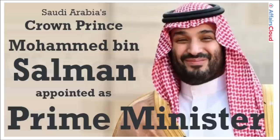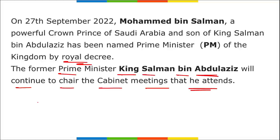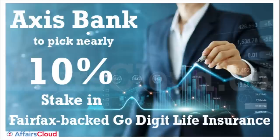Saudi Arabia's Crown Prince Mohammed bin Salman has been appointed as Prime Minister by royal decree. The former Prime Minister King Salman bin Abdullah will continue to chair cabinet meetings he attends. Mohammed bin Salman, also known as MBS, is 37 years old and a member of the Saudi royal family. Prior to becoming Prime Minister, he was serving as Minister of Defense and was already seen as the de facto ruler of Saudi Arabia.